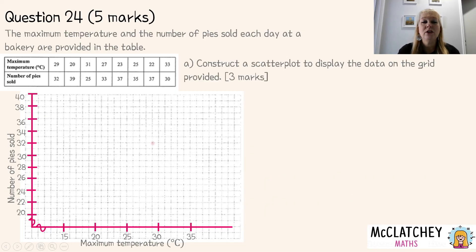Okay, now what I need to do is to start plotting my points. So my first point is 29, 32. So I come across to 29, and then up to 32, put a clear dot on there. And I'm going to continue that process. So my next one is 20, then 39, then 31, 25, 27, 33, 23, 37, and so on. So all of my dots are going to be appearing there. Okay, so now I've constructed the scatterplot. And that's worth another mark because I've accurately plotted my points. So make sure you try and do that to the best of your ability.